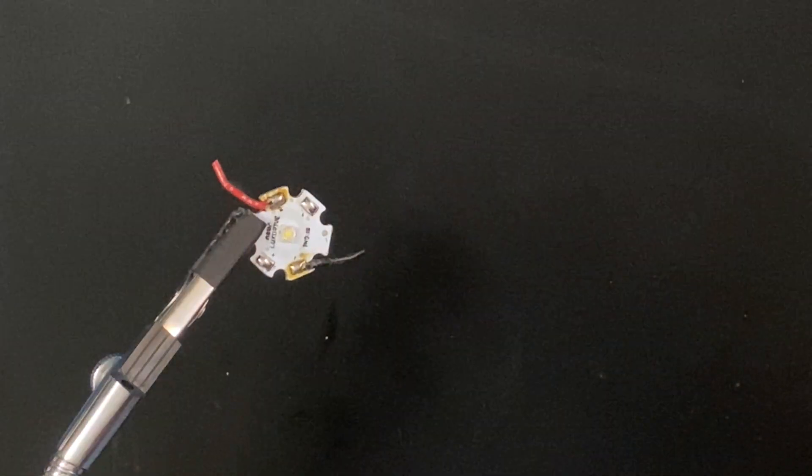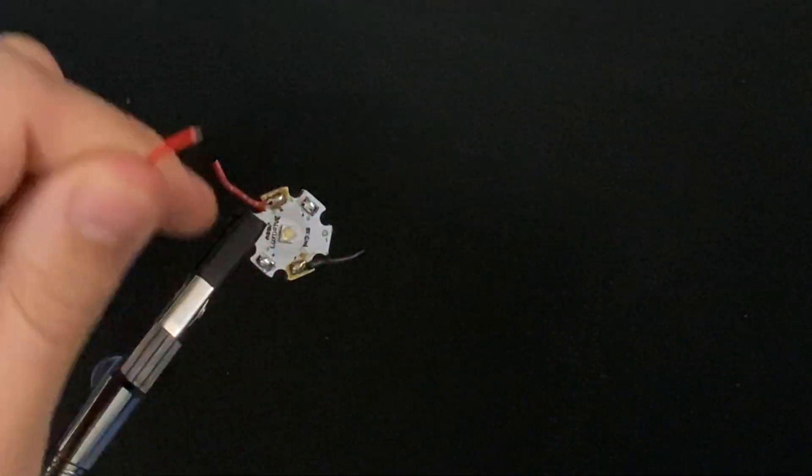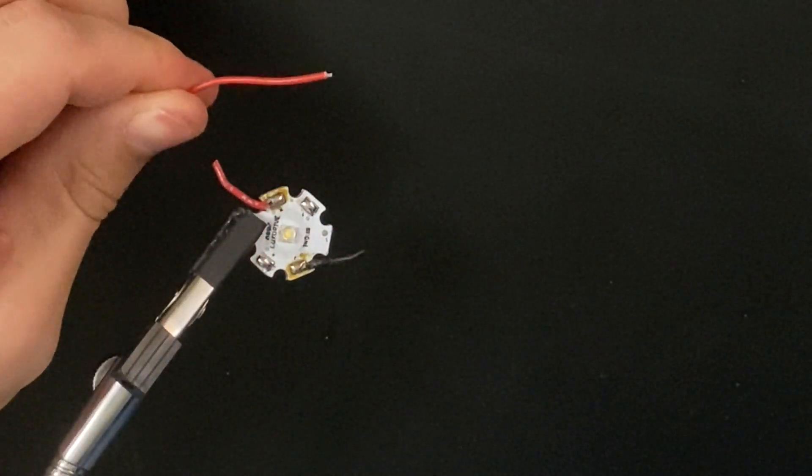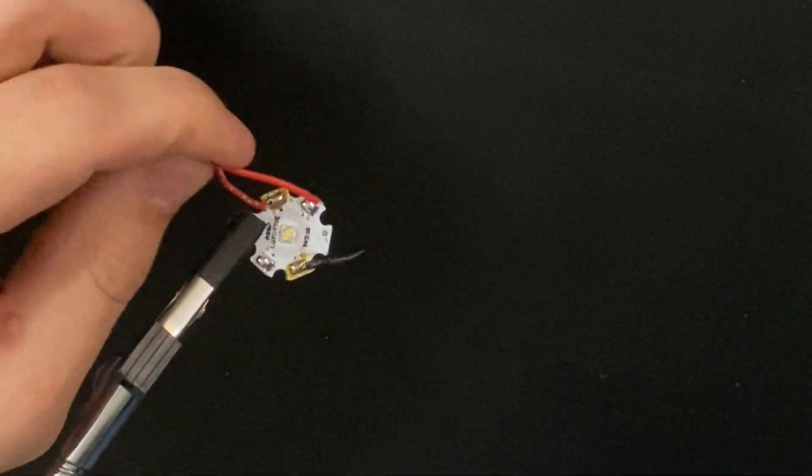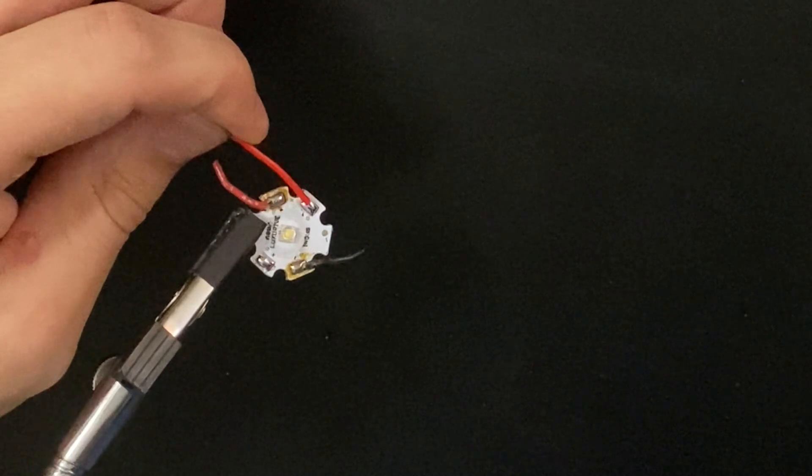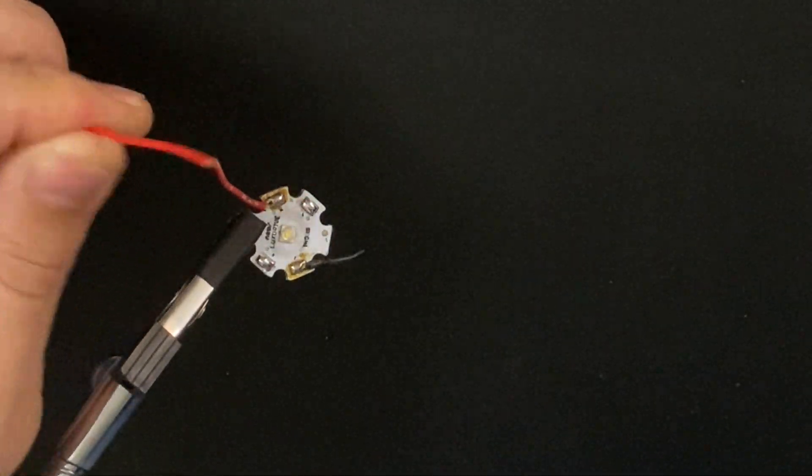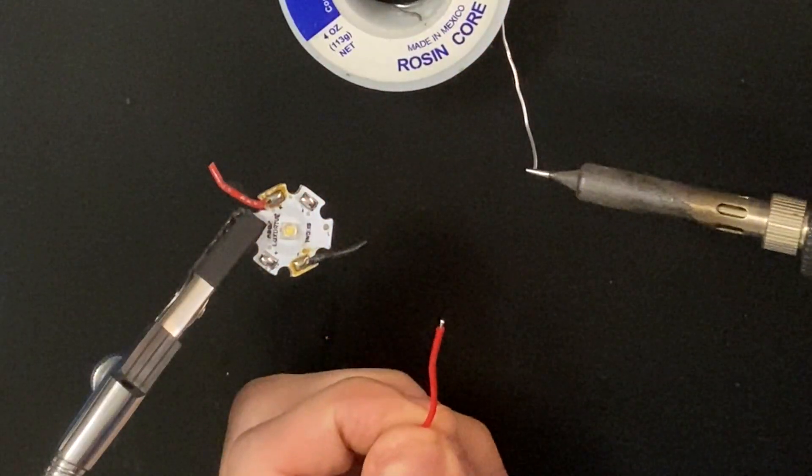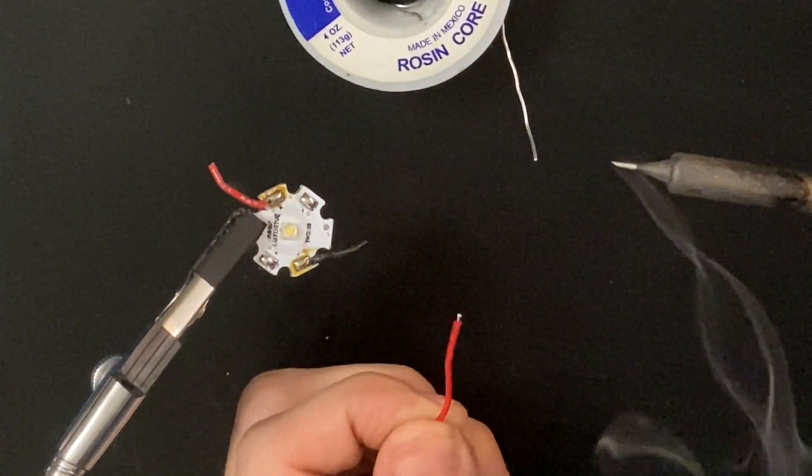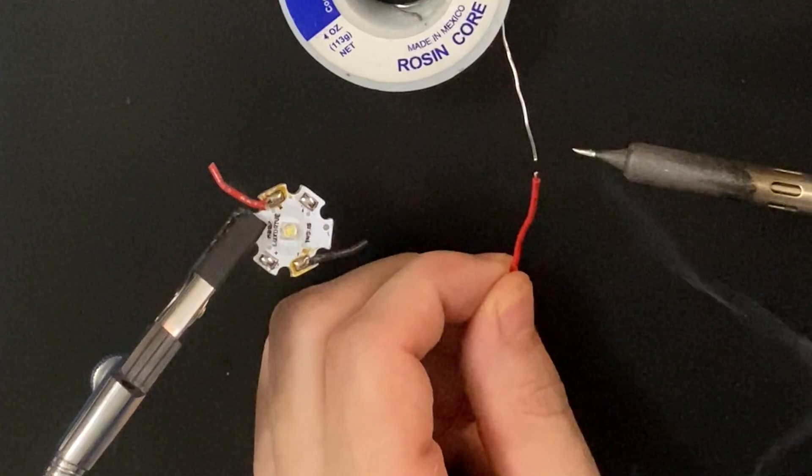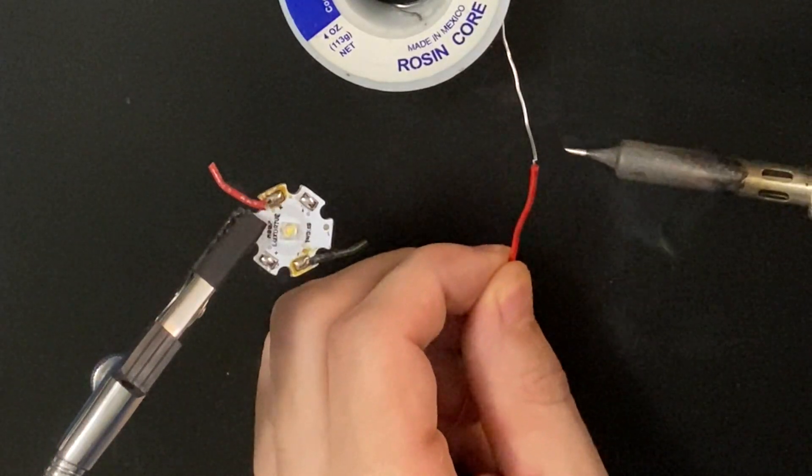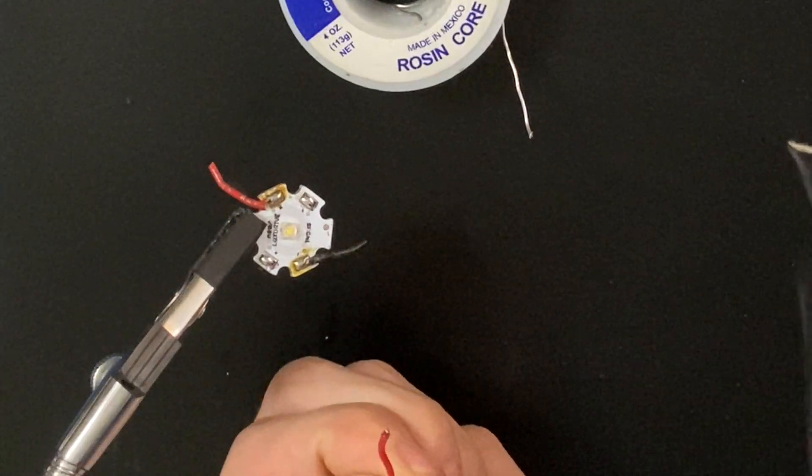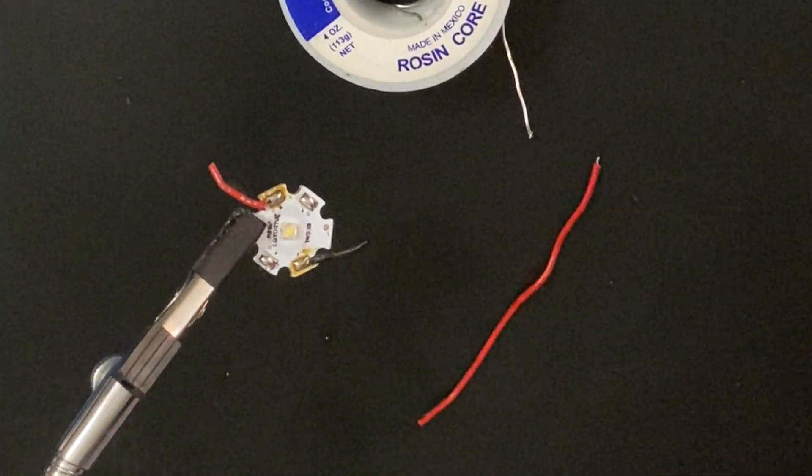And then we're going to pre-tin our wire. First, you're going to want to strip your wire and have it just be about this much, the least amount possible. You want to make sure the exposed wire isn't going to be over the pad. That's enough to get the current going. Less to heat up, the quicker it will solder. And then we're going to pre-tin our wire. Like this. And that gets it nice and pre-tinned.